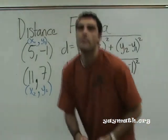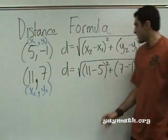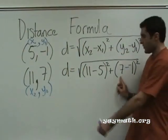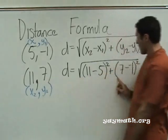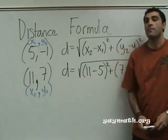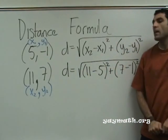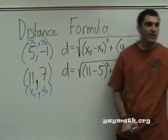Seven is y2, minus y1 is negative one. So it's minus negative one. This will be plus. I just want you to see double negative first.